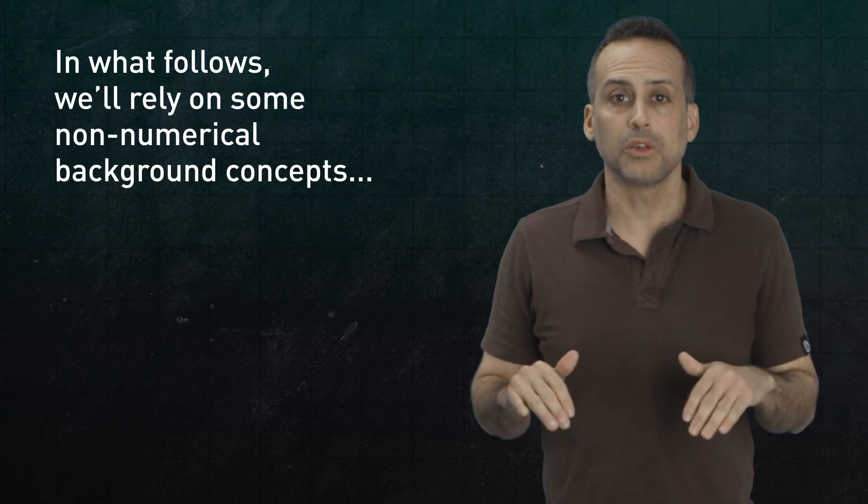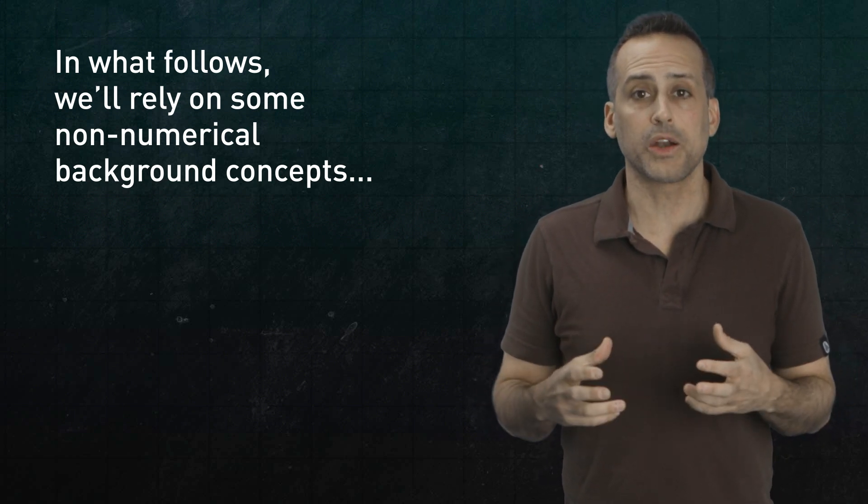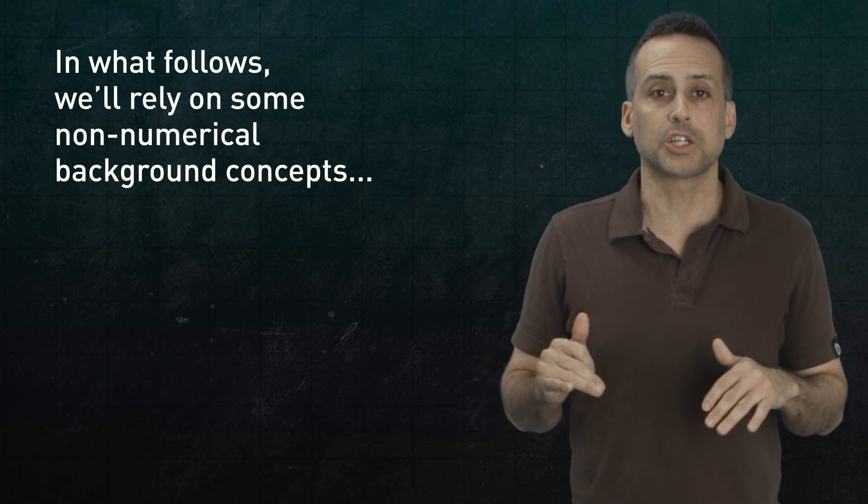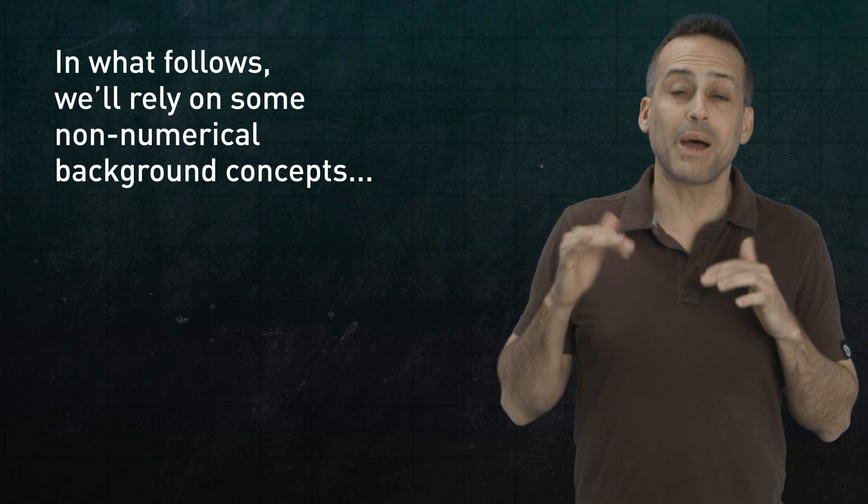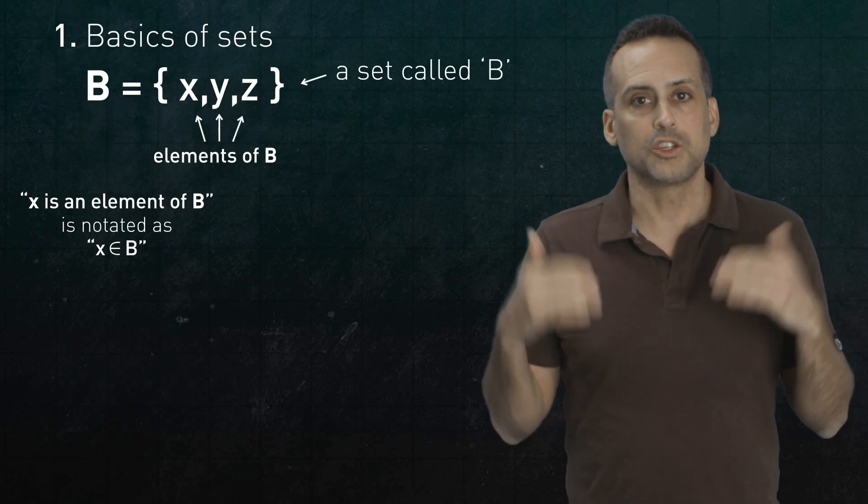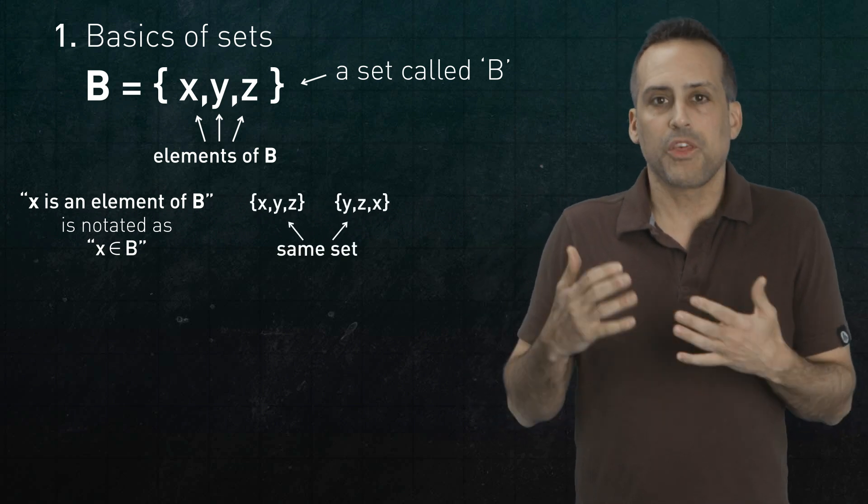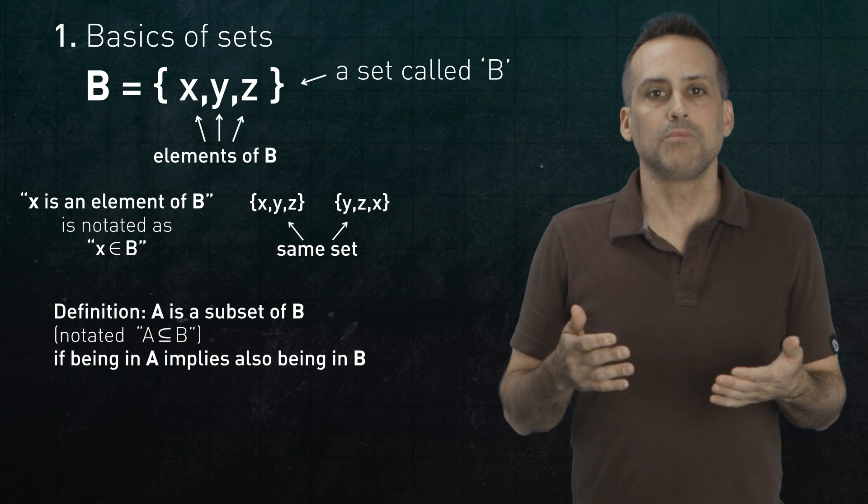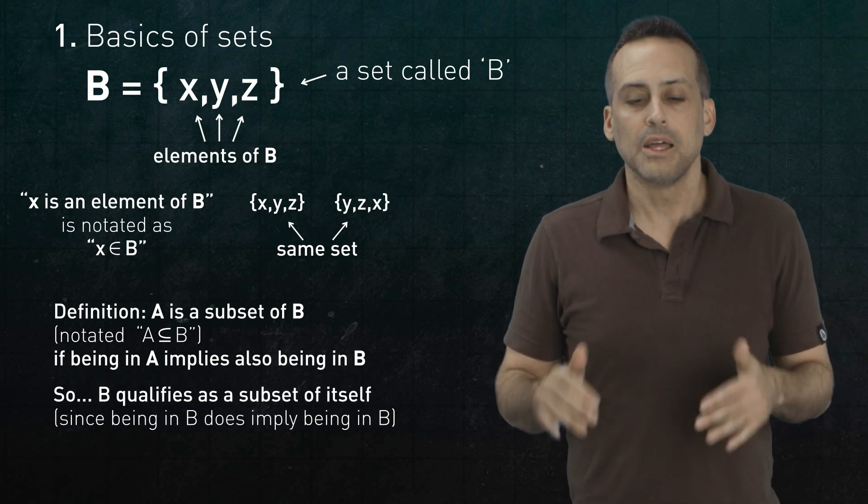First, some preliminaries. To make this somewhat self-contained, I need to assume your familiarity with some basic logical infrastructure that is not specific to numbers. First of all, you should be familiar with some ideas surrounding sets. Namely, that the members of a set are called elements, the two sets with an identical roster of elements are really the same set, and with the idea of a subset of a set. In particular, the fact that every set is a subset of itself.